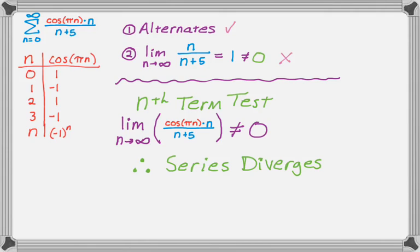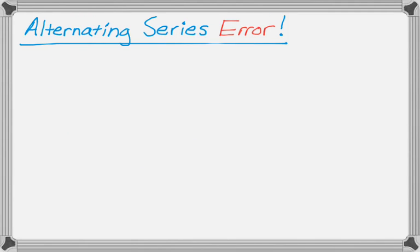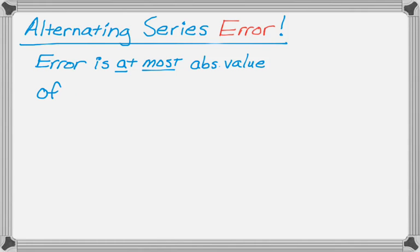So alternating series tests will test for convergence. Nth term tests always test for divergence. And let's take a look at alternating series error, which is really one of the easier things we can do. So the error involved in using an alternating series is at most the absolute value of the first term that you leave off. So that's very easy to remember. Commit it to memory right now and never get it wrong.